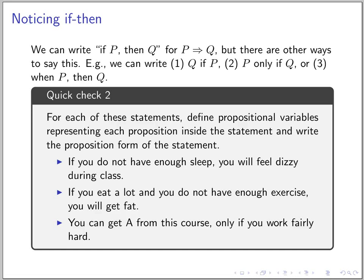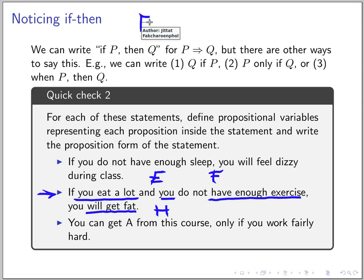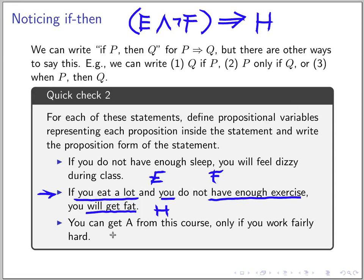Let's continue our discussion on implications from last time — this is the quick check. Let me define E to be the proposition 'you eat a lot,' and F to mean 'you have enough exercise.' The last one will be H. So this sentence would be: if you eat a lot (E) and you do not have enough exercise (not F), both of these imply H.